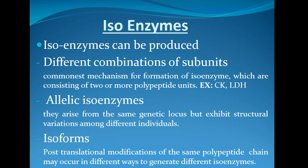Allelic isoenzymes are another reason for isoenzyme formation. They arise from the same genetic locus but exhibit structural variations among different individuals. You need a molecular biology background to fully understand this, but remember: allelic isoenzymes arise from the same locus but are different because of structural variation among individuals.